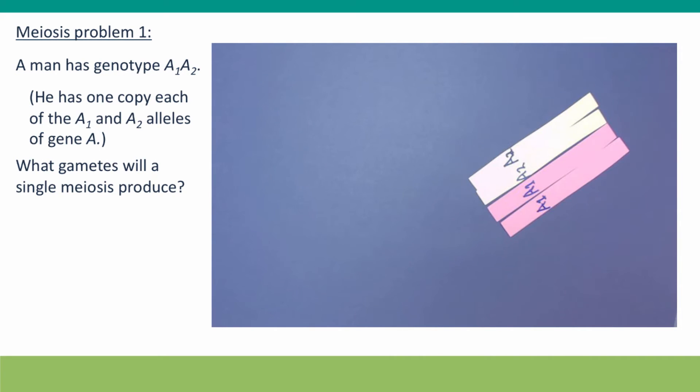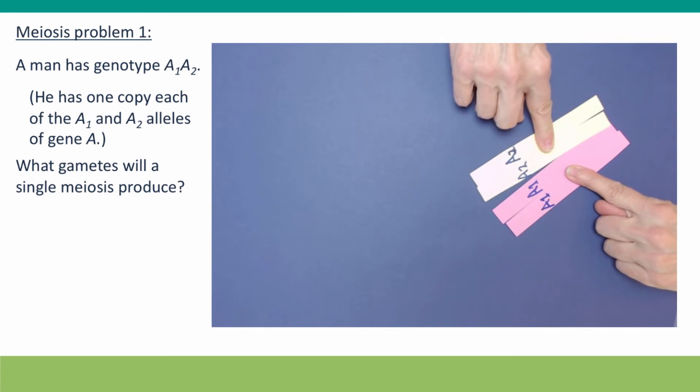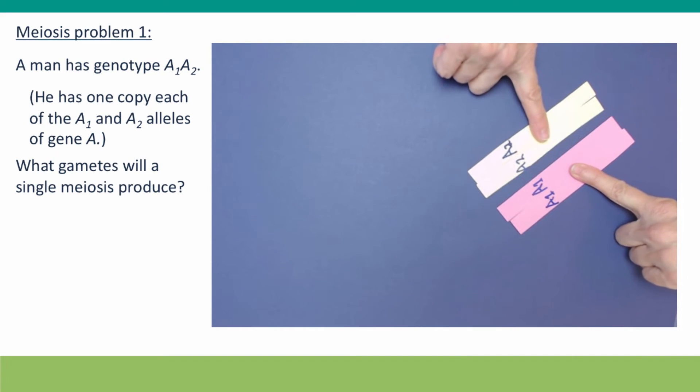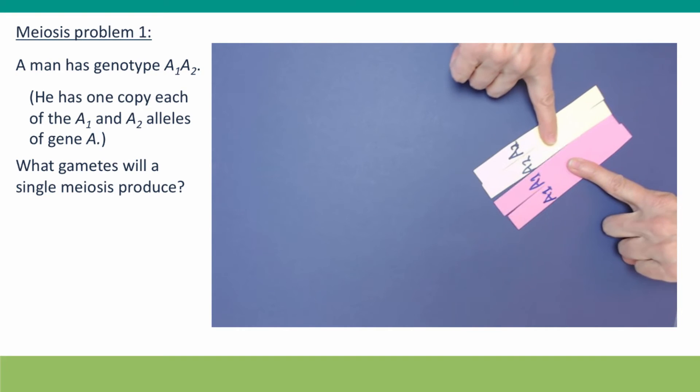Once they've paired up, each pair of sisters has a single kinetochore, and spindle fibers can attach from both sides. As in mitosis, the spindle fibers don't attach tightly unless their pulling power is being opposed by pulling from the other side.